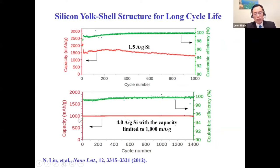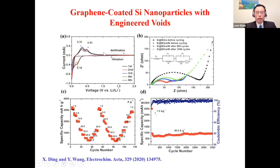If we maintain the specific capacity at 1,000 mAh per gram, you can see over 1,400 cycles there is no capacity decay at all. Another example using graphene-coated silicon nanoparticles with engineered voids shows that with this hierarchical design, you could achieve 3,500 cycles without capacity decay.